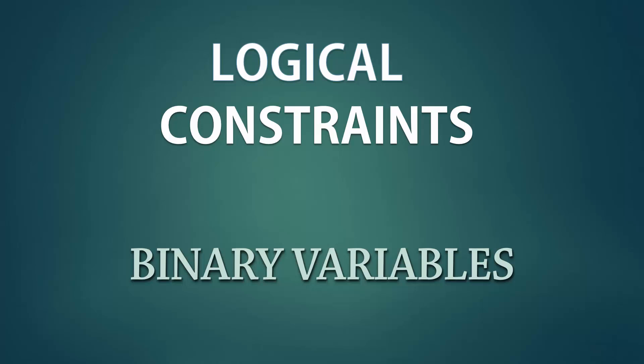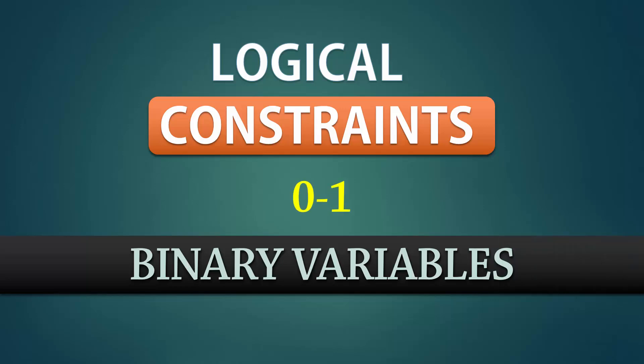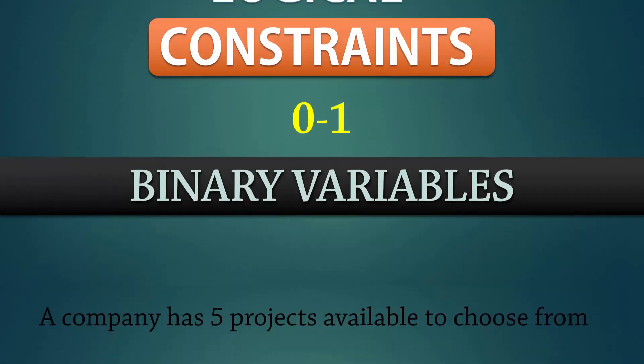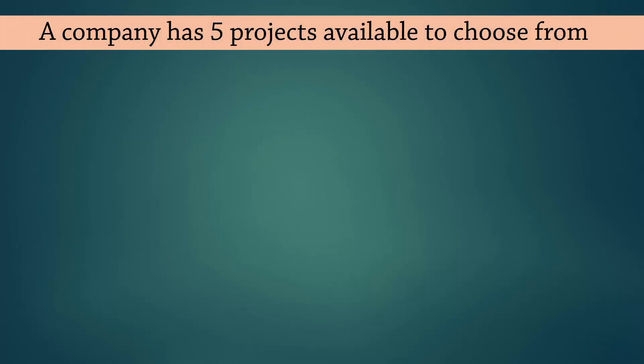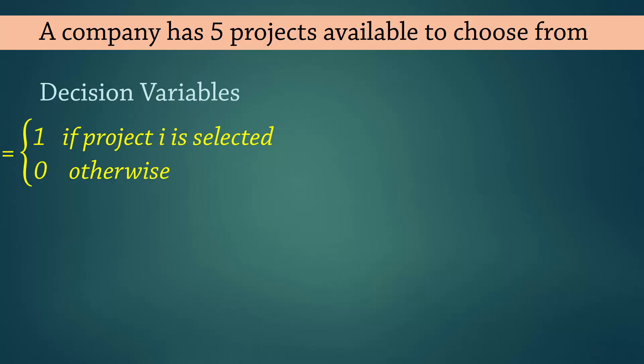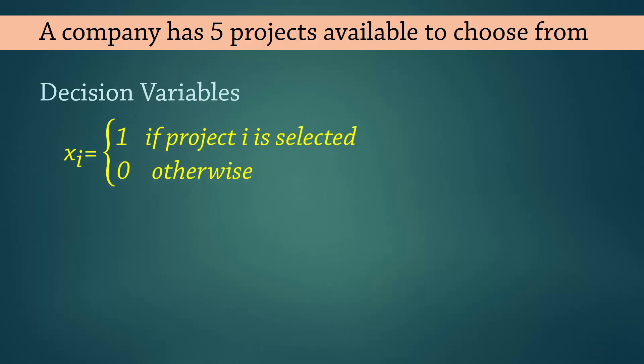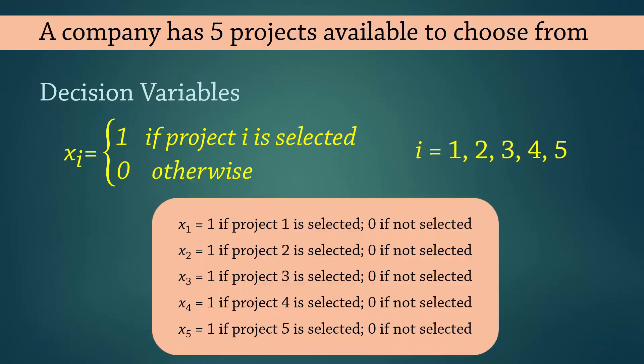Welcome. In this video, I'll be formulating logical constraints using binary or 0, 1 integer variables. Suppose a company has 5 projects available to choose from. We can define the decision variables as follows: x_i equals 1 if project i is selected and 0 if not selected, where i equals 1, 2, 3, 4, and 5.